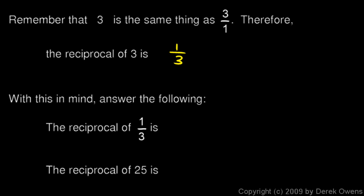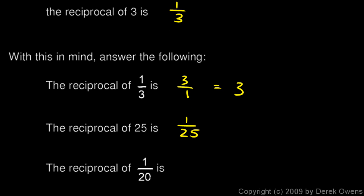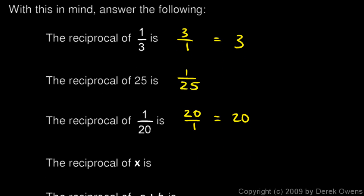With that in mind, answer the following: what is the reciprocal of 1/3? Well, the reciprocal of 1/3 is 3/1, which is just 3. The reciprocal of 25 — remember, 25 is the same as 25/1 — so the reciprocal of 25 is 1/25. The reciprocal of 1/20 is 20/1, which is just 20.